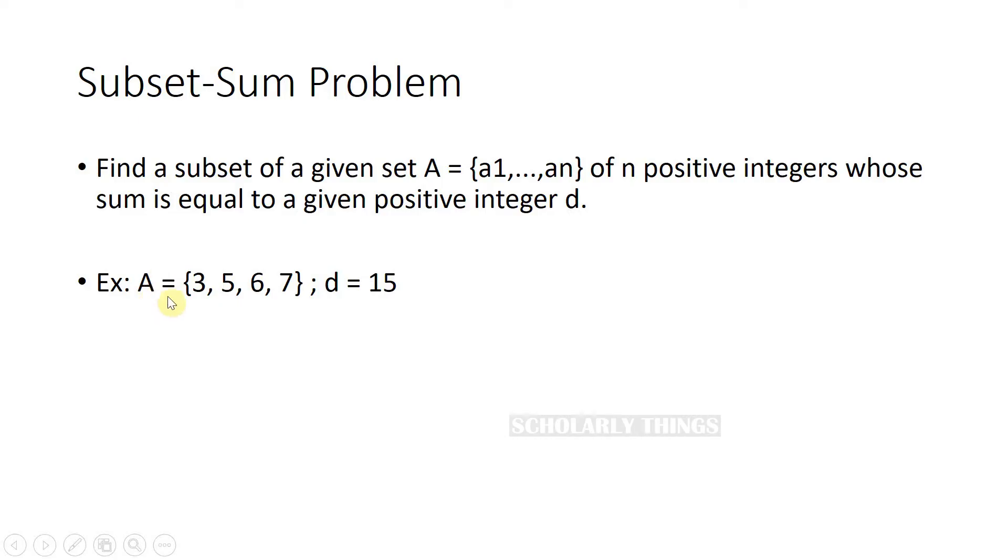For example, if A contains elements 3, 5, 6, and 7, and d is given to be 15, we have to find subsets whose elements add up to 15. The sum of the elements in those subsets should be 15.